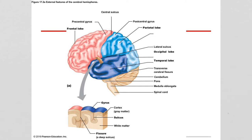Just in front of the central sulcus is a gyrus called the precentral gyrus. Behind the central sulcus is the postcentral gyrus. The physiological terms for these areas are the primary motor cortex and the somatosensory cortex. In lab, I want to see the precentral gyrus — the structural term, not the functional term.